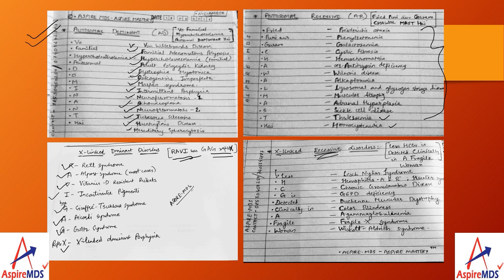For X-linked recessive disorders, the mnemonic is 'LESS HCG IS DETECTED CLINICALLY IN A FRAGILE WOMAN.' L for Lesch-Nyhan syndrome, HCG for hemophilia A, B, and Hunter syndrome, C for chronic granulomatous disease, G for G6PD deficiency, D for Duchenne muscular dystrophy, C for color blindness, A for agammaglobulinemia, F for fragile X syndrome, and W for Wiskott-Aldrich syndrome. Just remember these tables once or twice before the exam and they will definitely help you. Thank you everyone.